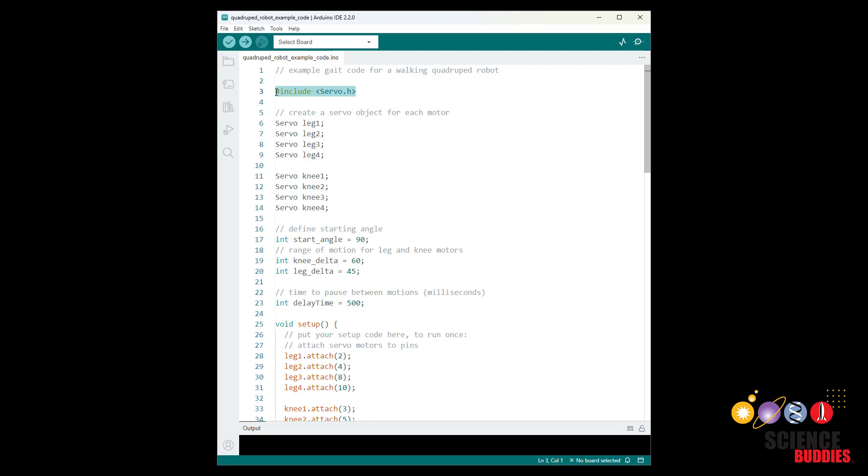To control the servos and again we have a separate tutorial video about this you need to include the servo library then you're going to create a servo object for each motor. It might help to give them names that make sense to you like leg one leg two knee one knee two etc.